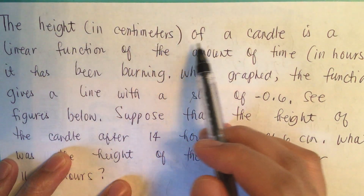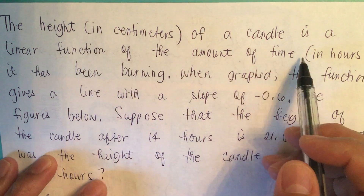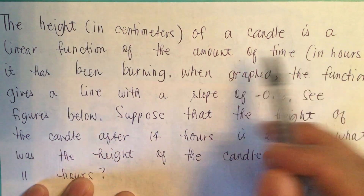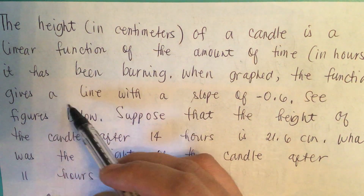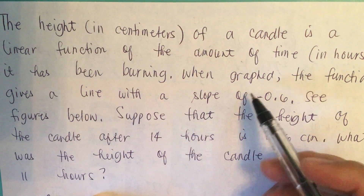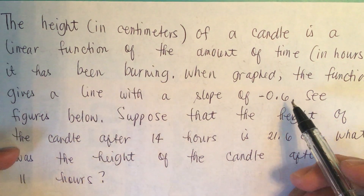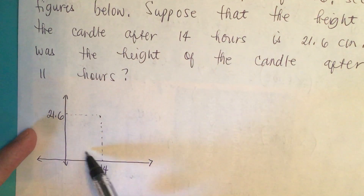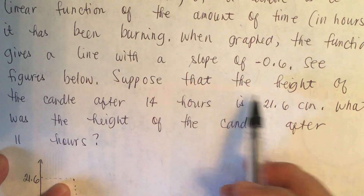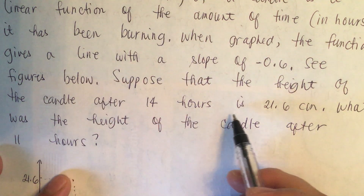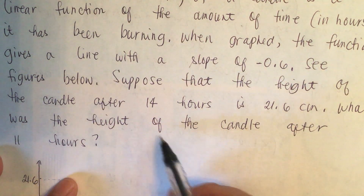The height in centimeters of a candle is a linear function of the amount of time in hours it has been burning. When graphed, the function gives a line with a slope of negative 0.6. The height of the candle after 14 hours is 21.6 centimeters.